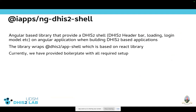One of the utilities I'll be demoing today is the DHIS2 shell — we call it ng-dhis2-shell. It's already available on NPM under the namespace iapps, where you'll find a couple of packages. In our namespace, those starting with 'ng' are Angular-based, and those without 'ng' are platform-independent libraries. This library abstracts the shell so that when you run it, you can have a header, loading indicator, circular loader, login modal in your Angular application, and it internally wraps the DHIS2 app shell.